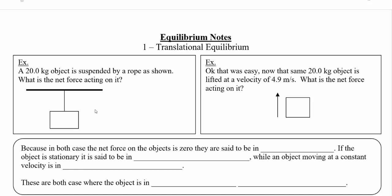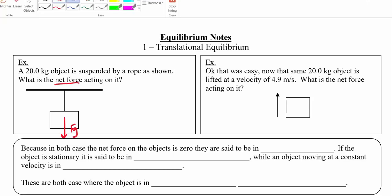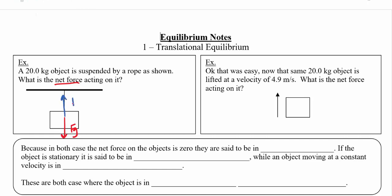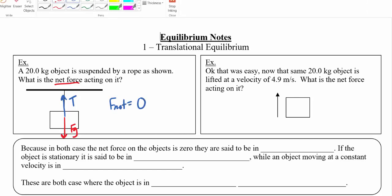If you've got an object suspended by a rope hanging from the ceiling, what is the net force acting on the rope? Well you could imagine that we would have a force of gravity pulling down and then a tension force pulling upwards. But since it's just hanging there, the net force in this case would be zero.